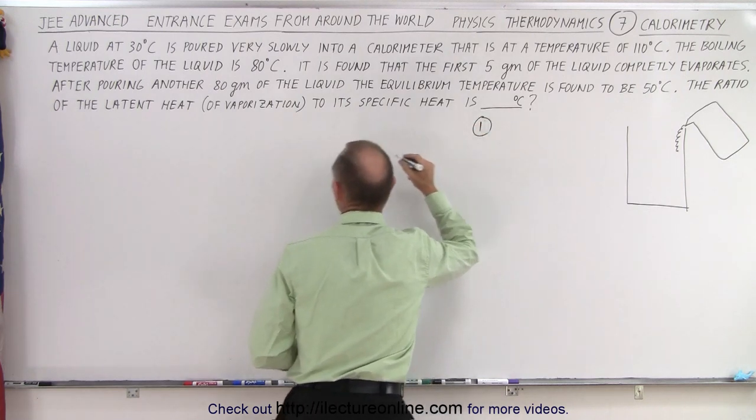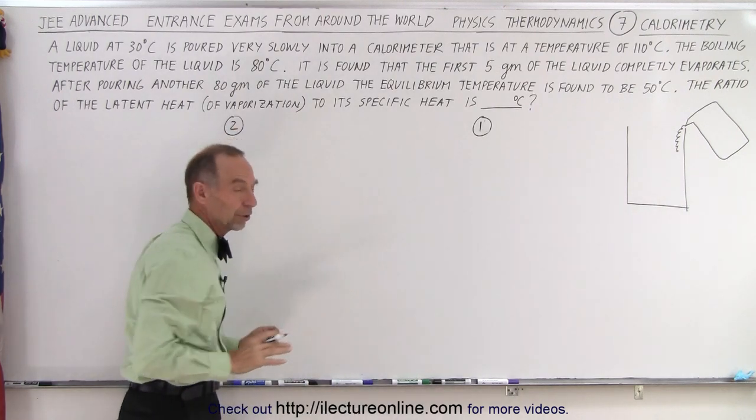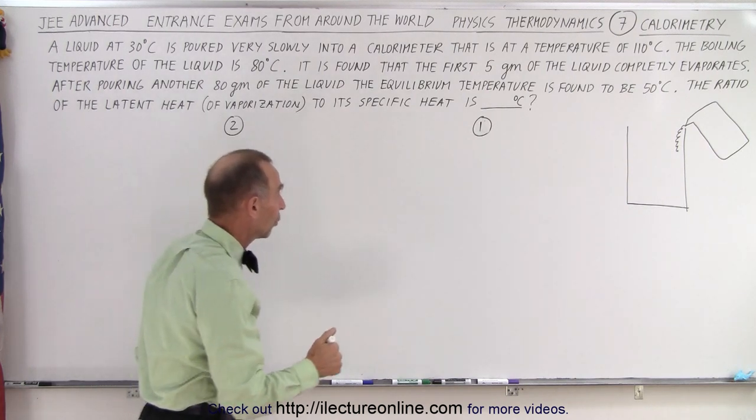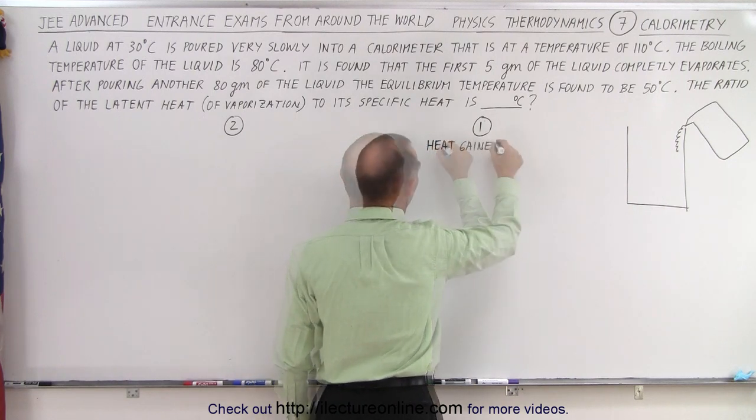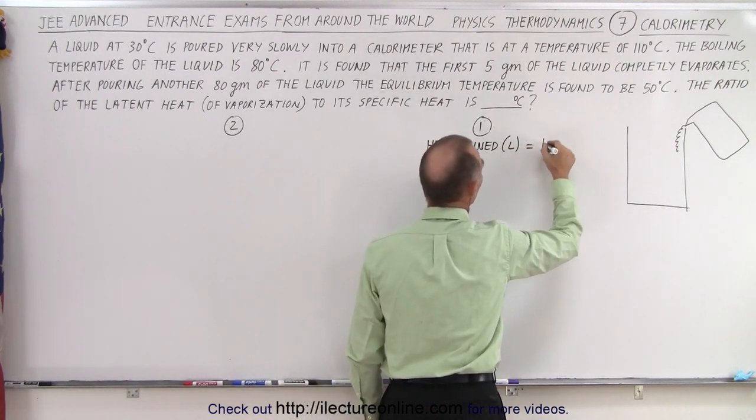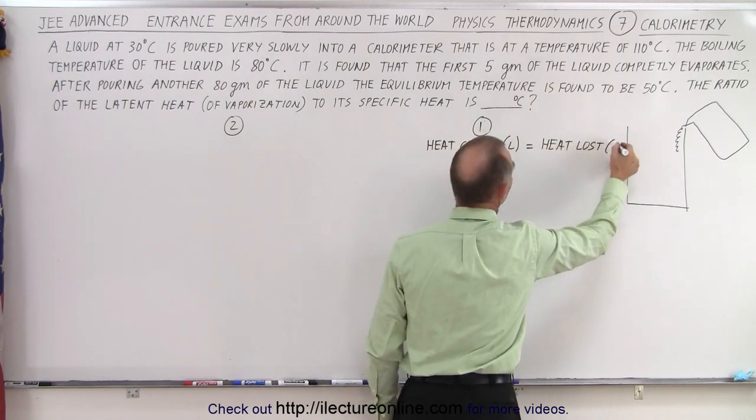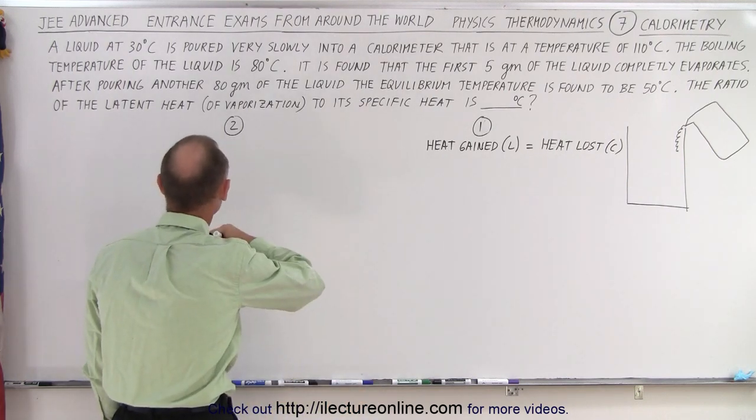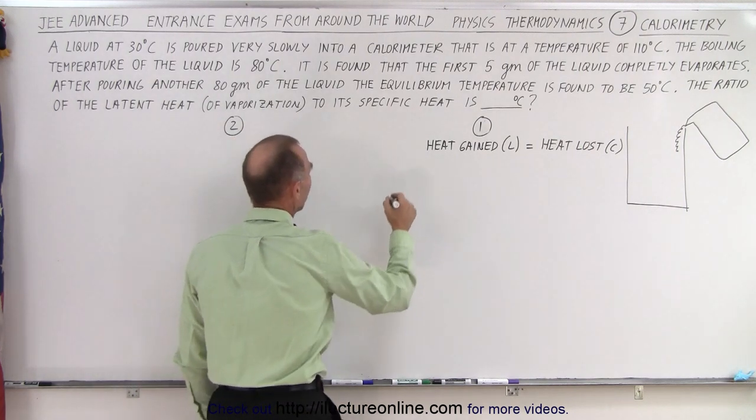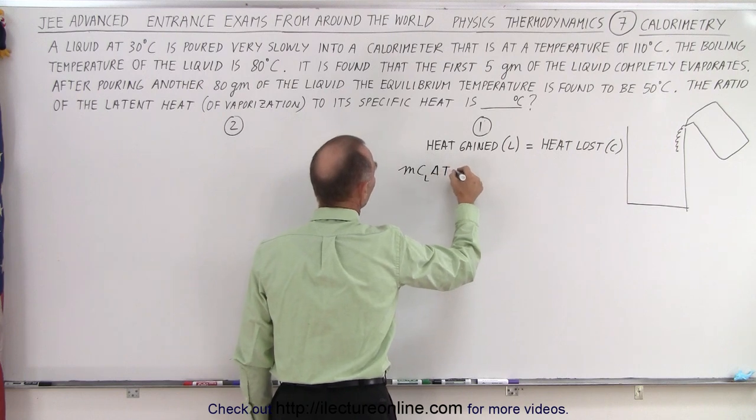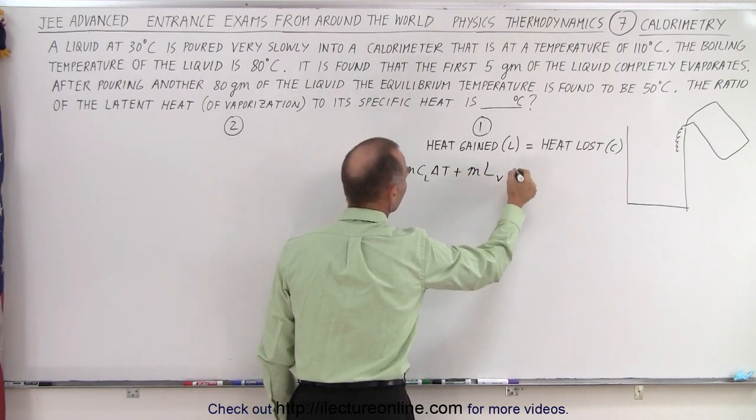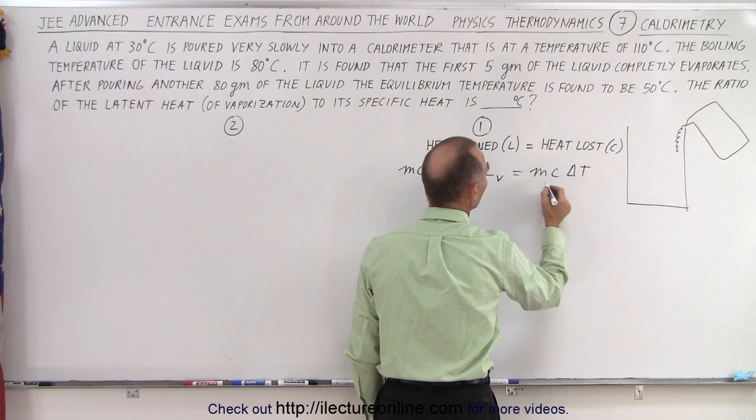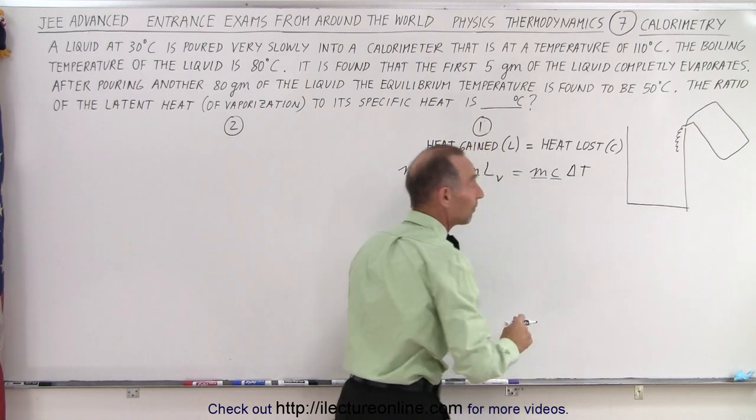Let's start with part 1 here and put part 2 over here. So there's two things we have to look at separately. The first part is we pour 5 grams of liquid into the calorimeter and that evaporates. So here we can say that heat gained by the liquid is equal to the heat lost by the calorimeter. The heat gained by the liquid—well first of all, the liquid starts at 30 degrees and rises up to 80 degrees before it begins to boil. So we have MC of the liquid delta T plus mass times the latent heat of vaporization equals the heat lost by the calorimeter, which would be MC delta T. Now notice we don't know the mass of the calorimeter and we don't know the specific heat of the calorimeter. They're both unknown.